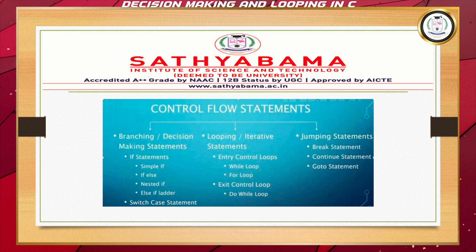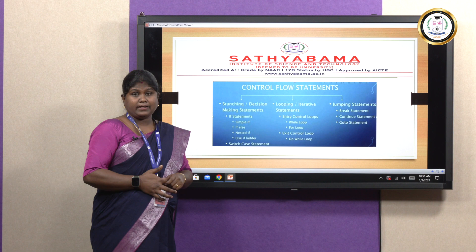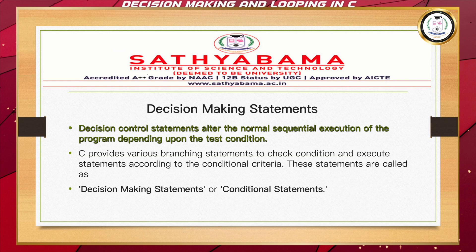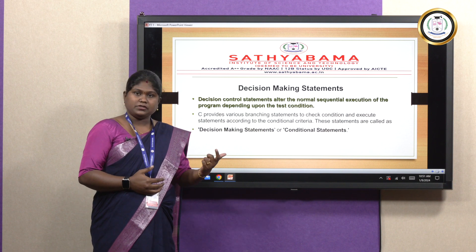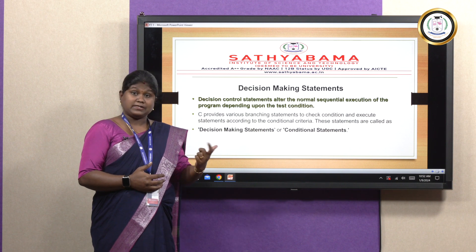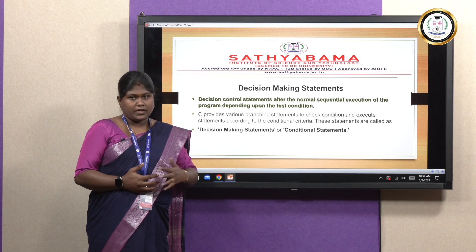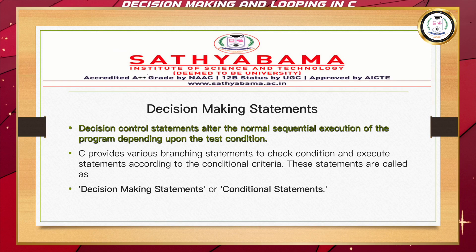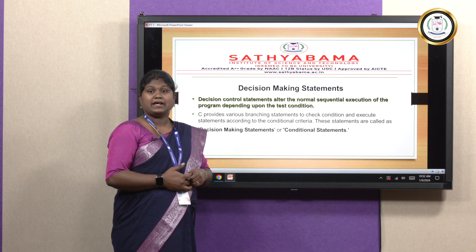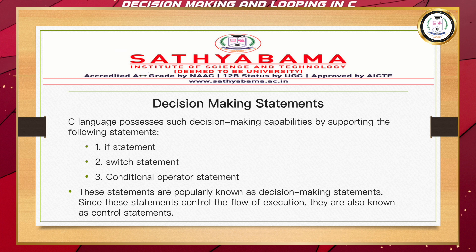This is the overview of the decision-making statements and these are the inner categories. In C language, there comes a situation where the sequential approach has to be changed. We have a condition, and that condition has to be checked, and based on the result of the condition, the flow of the program may change. For that reason, we are using decision-making statements, which are also called conditional statements. In C language, this decision-making technique is supported by three statements.